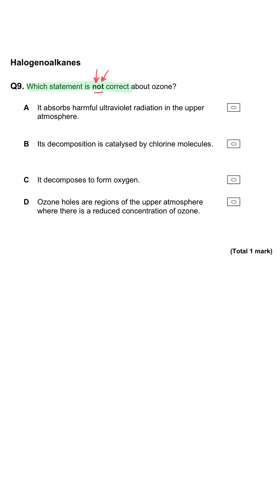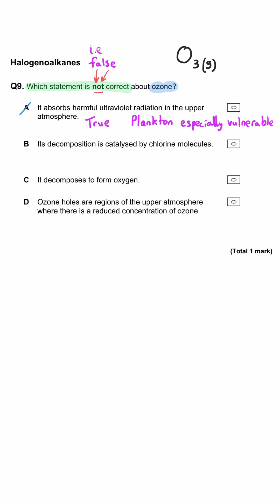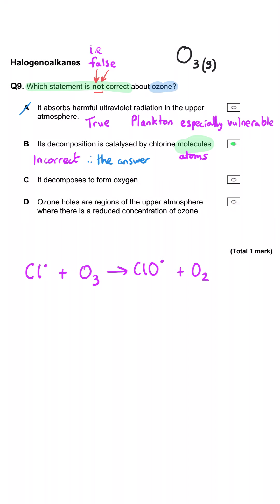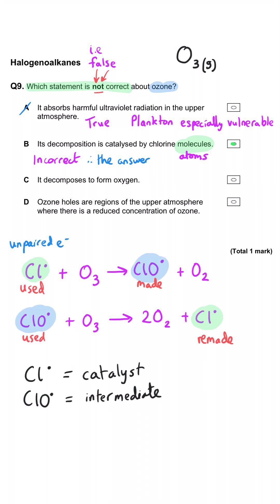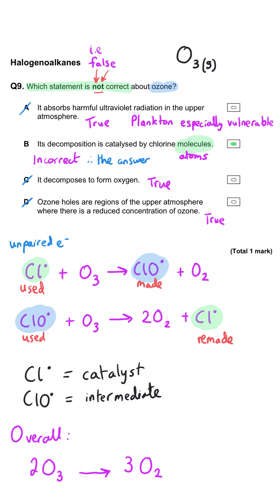Which statement is not correct about ozone? A — it absorbs harmful ultraviolet radiation in the upper atmosphere — is definitely true. B — its decomposition is catalysed by chlorine molecules — is incorrect: it is chlorine atoms, specifically chlorine free radicals with an unpaired electron. The Cl free radical reacts with ozone to make O₂ and the ClO free radical, which then reacts with more ozone to regenerate the Cl free radical — hence it is the catalyst. C and D are both true, so B is the answer.